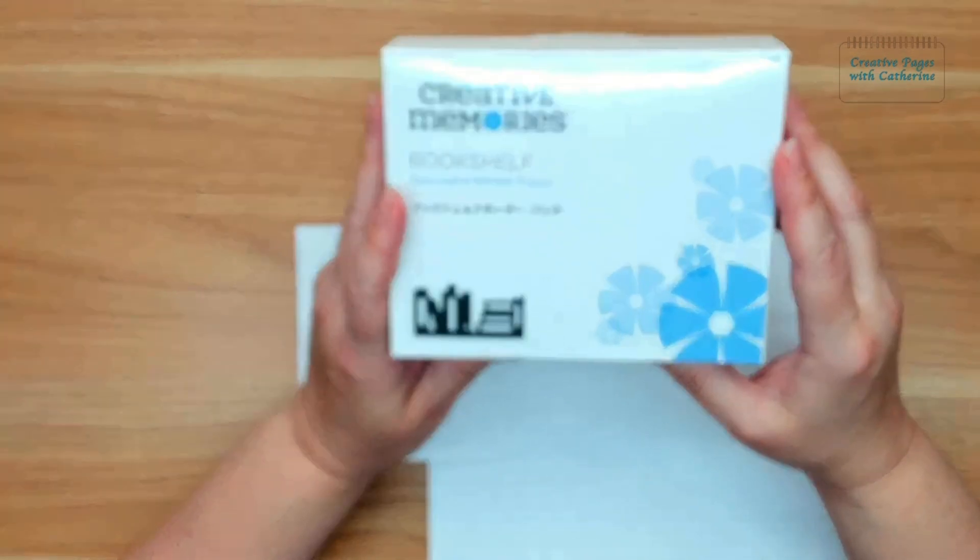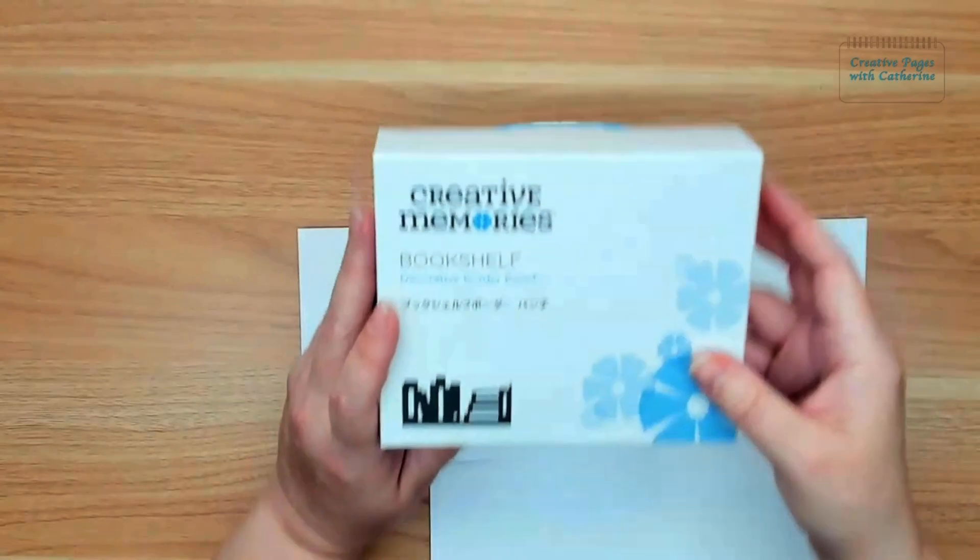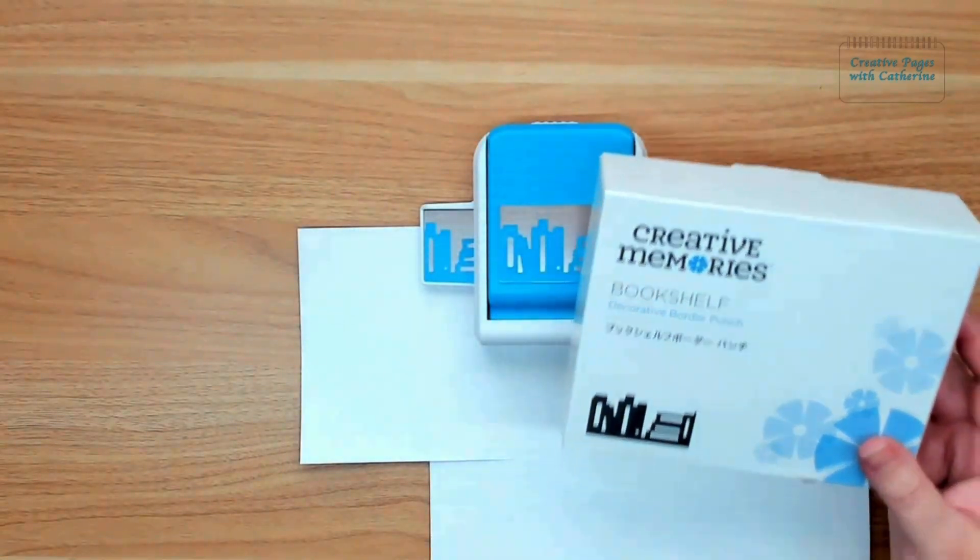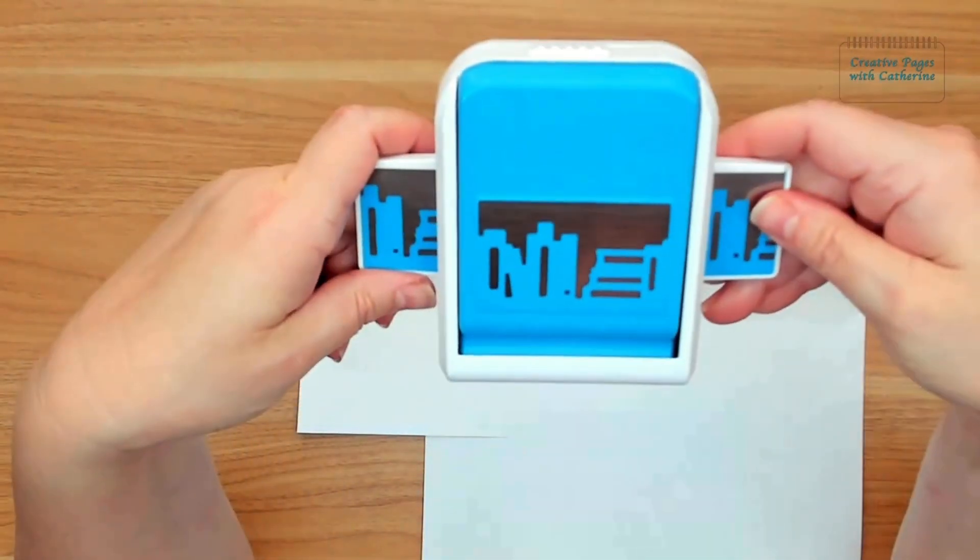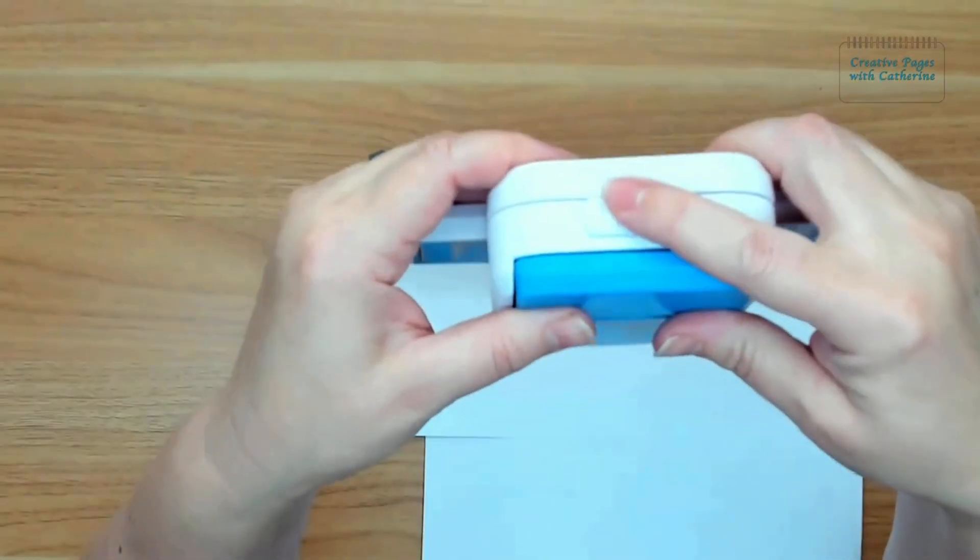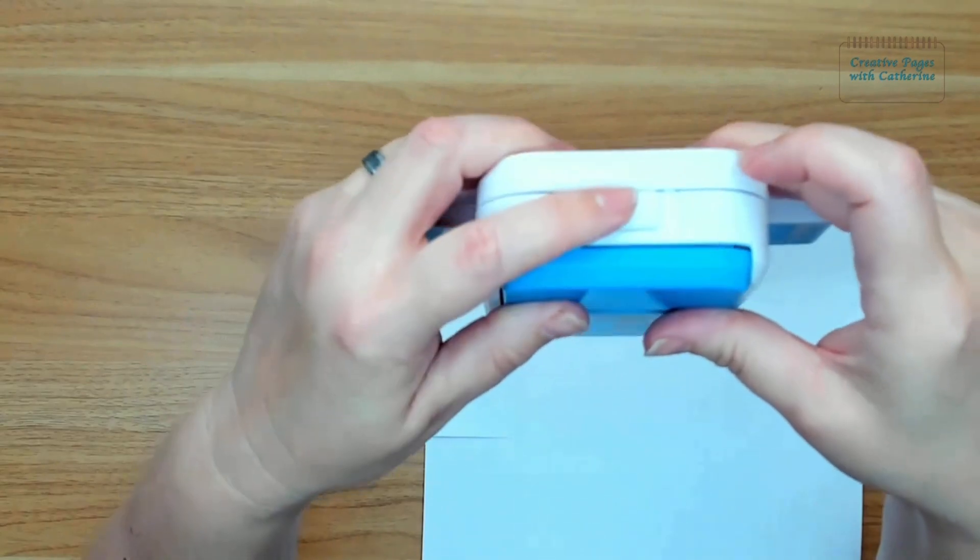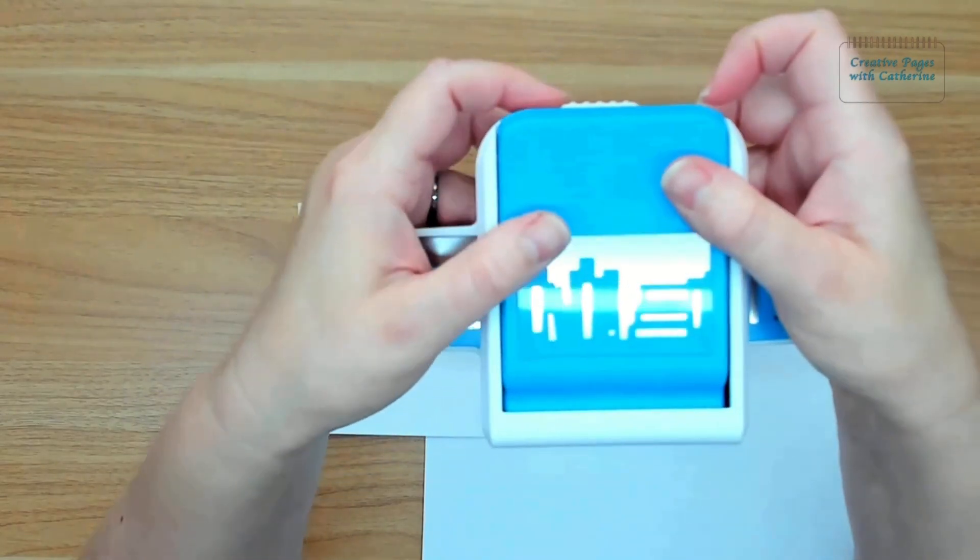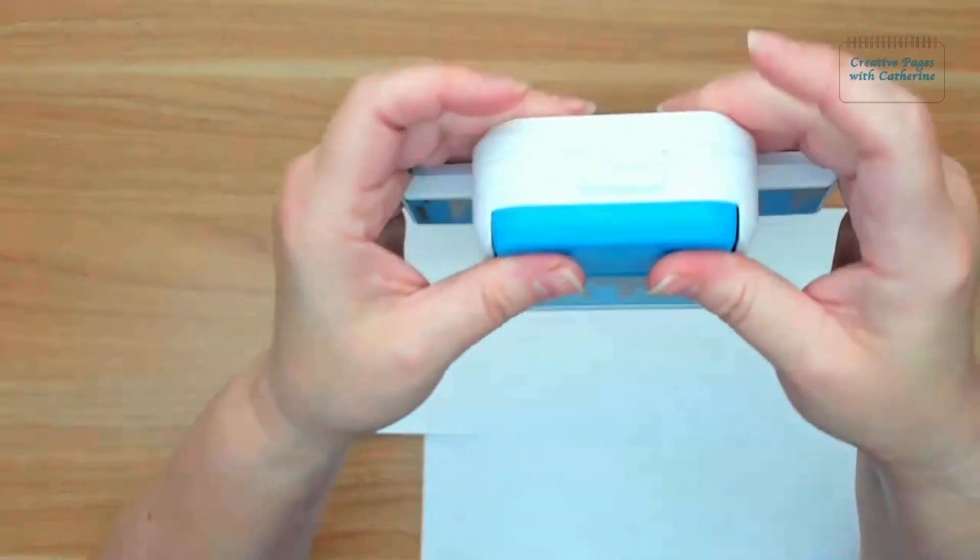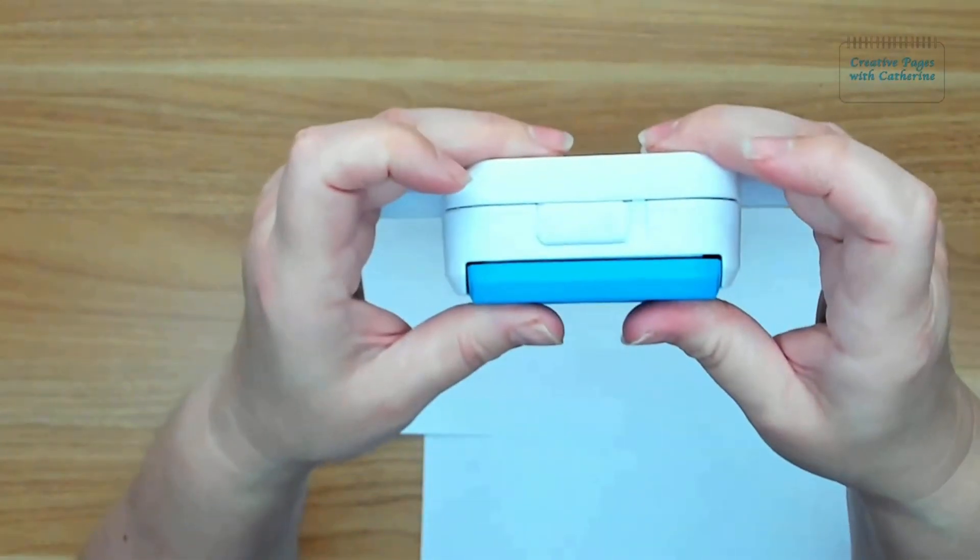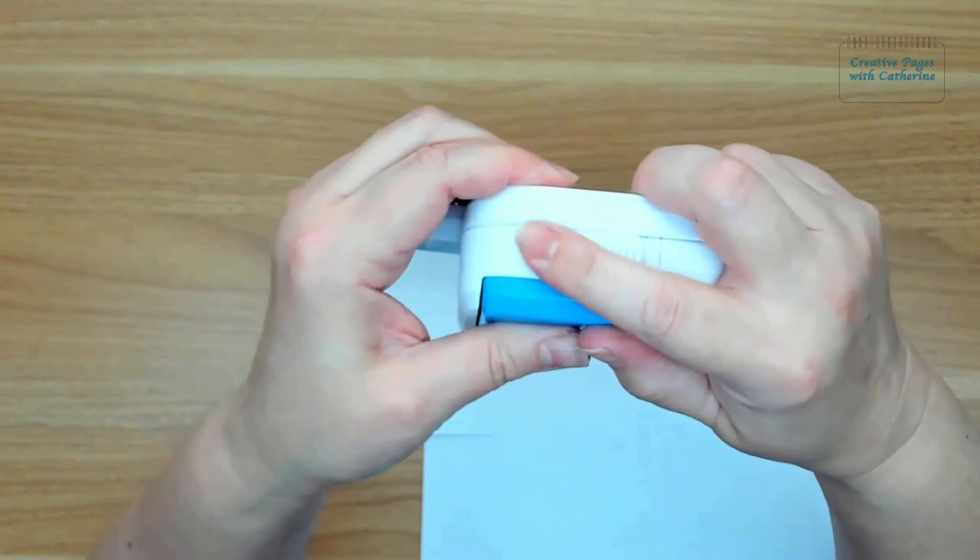This is one of our edge type decorative border punches. When you take the punch out of the box, all of our punches have a release on them so that when you unfold them, you pull it to the right to lock it in place, and pull it to the left so it lays flat on your shelf.